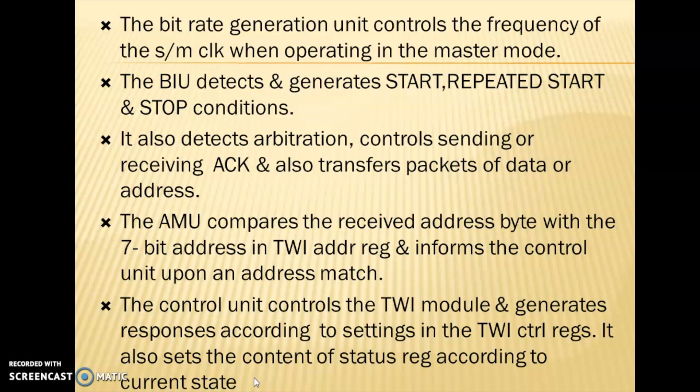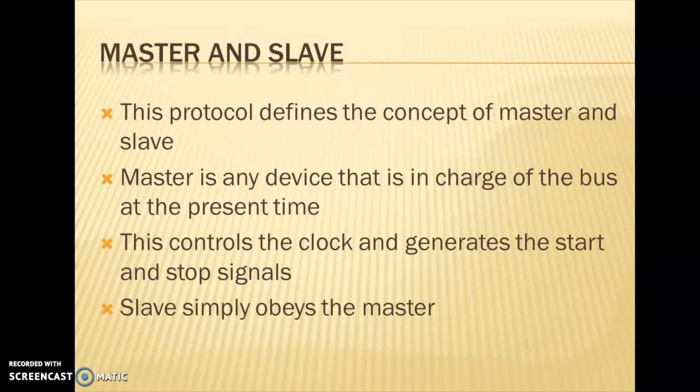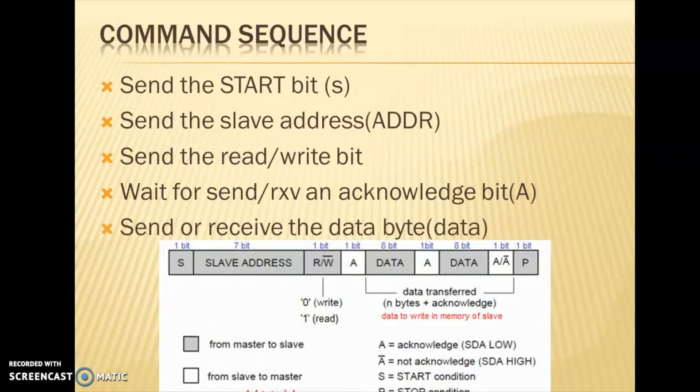The control unit controls the TWI module and generates responses according to the settings in the TWI control registers. It also sets the content of the status register according to the current status. For serial communication, there will be a master device and a slave device. The master is in charge of the bus and generates the clocks, and the slave simply obeys the master.